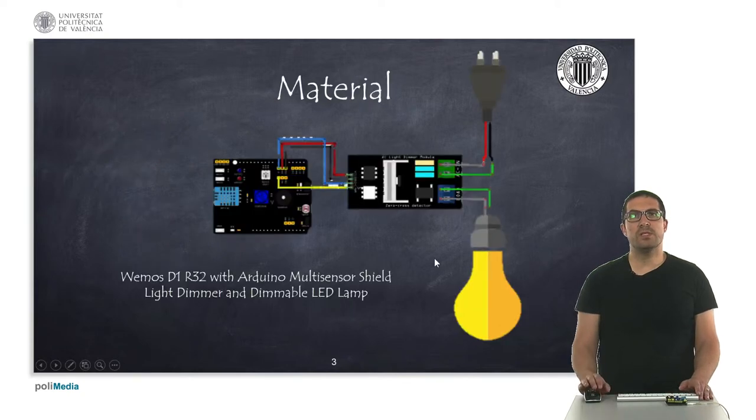This is the material that we will use for this presentation. We have as usual a Wemos D1 R32 together with the Arduino multi-sensor shield, and in this example what we have is the light dimmer electronic, this one, which is based on triac.